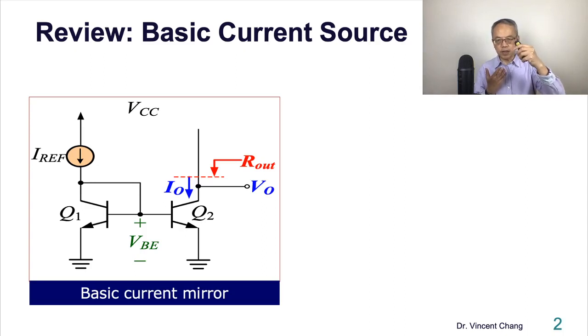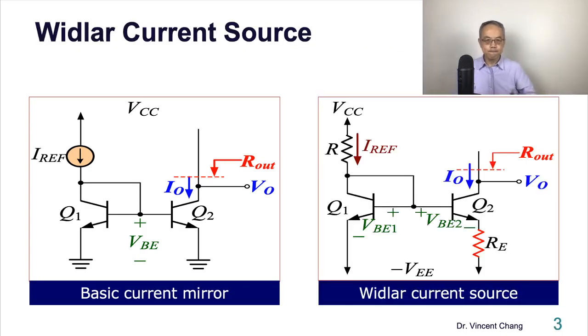Before we move on, I assume you already have foundation on the bipolar current mirror. The difference between these two sides, the left-hand side is the basic current mirror, on the right-hand side is the Widlar current mirror or Widlar current source.